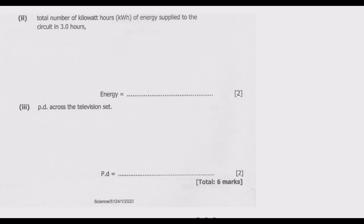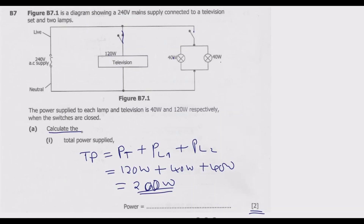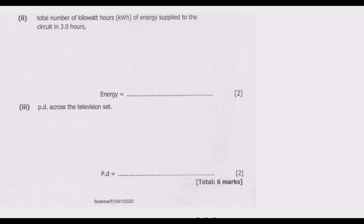The next part asks for the total number of kilowatt-hours of energy supplied to the circuit in three hours — again two marks. So how do we find the total number of kilowatt-hours of energy supplied? The total energy is a function of power times time, and it must be expressed in kilowatt-hours.